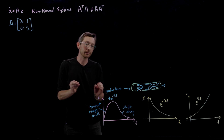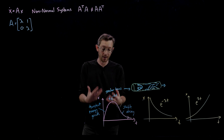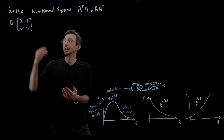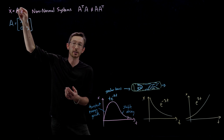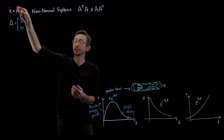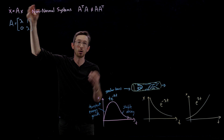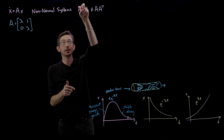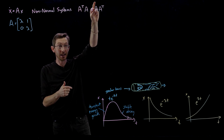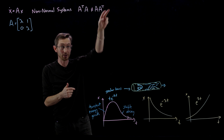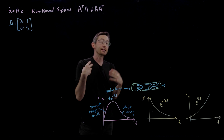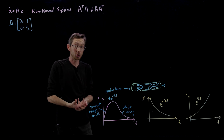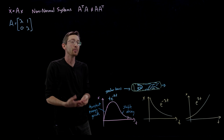This phenomenon appears in matrix systems where the A matrix is so-called non-normal, meaning that A-transpose times A does not equal A times A-transpose. This is a very common feature in lots of dynamical systems.